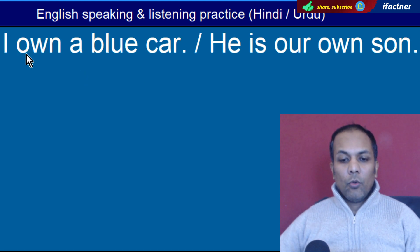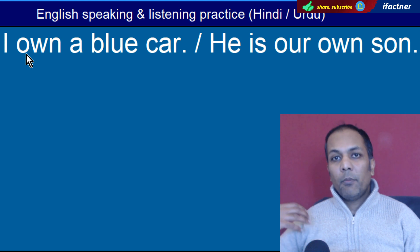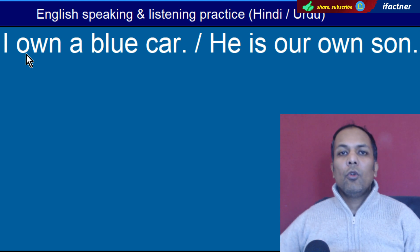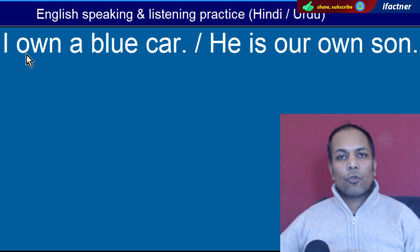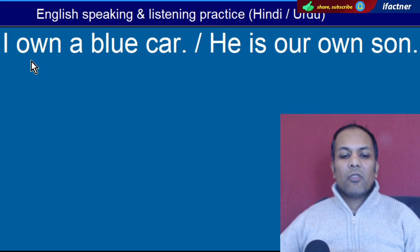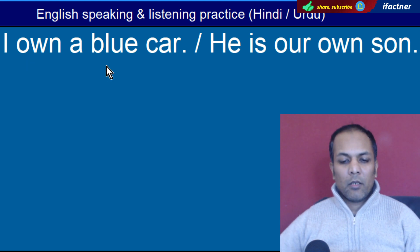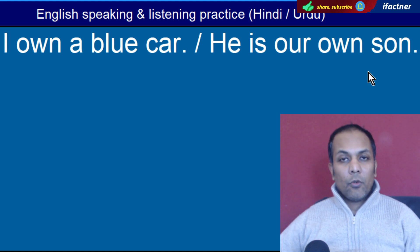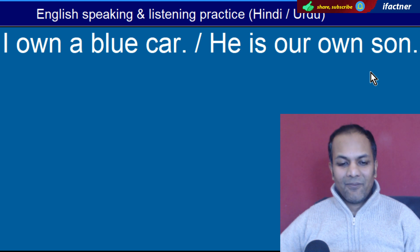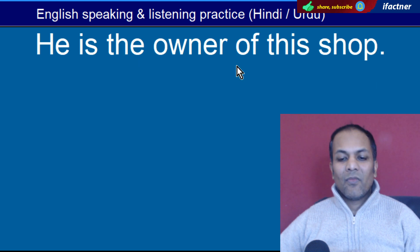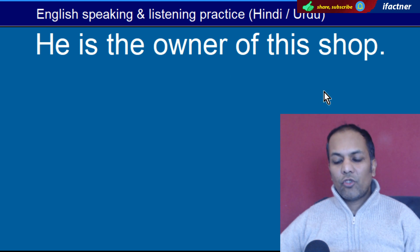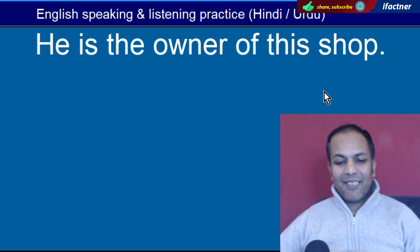Word hai 'Own'. Own hota hai apna. 'I own a blue car' — Main ek neeli gaari ka malik hoon. 'He is our own son' — Woh hamara apna beta hai. Word hai 'Owner'. Malik ko kaha jata hai. 'He is the owner of this shop' — Woh is dukaan ka malik hai.